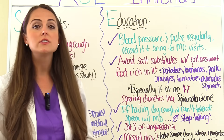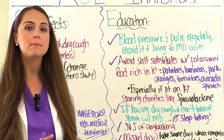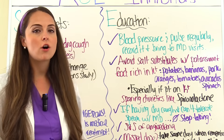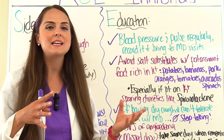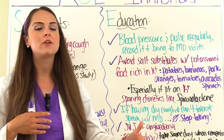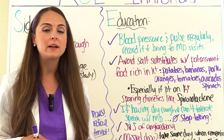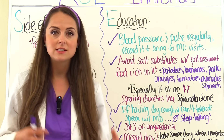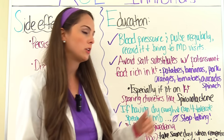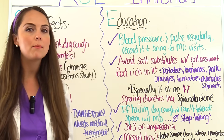Educate patients to avoid salt substitutes containing potassium and foods rich in potassium — such as potatoes, bananas, pork, oranges, tomatoes, spinach, and avocados — as these can raise potassium levels further. This is especially important if the patient is also taking potassium-sparing diuretics like spironolactone, which puts them at double risk for high potassium levels.